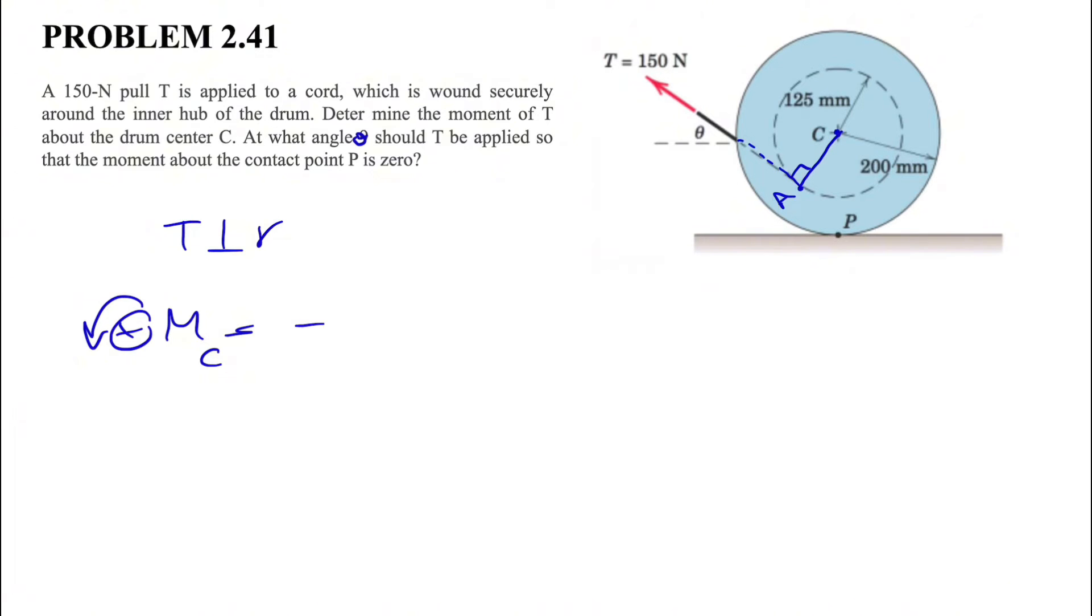We'll call counterclockwise positive. If we look at this we'll see the moment is clockwise, so we'll have a negative sign. The T is 150 newtons and the distance is basically the diameter of the inner circle with the dotted line which is 125 millimeters, divided by 1000 to get it in meter units.